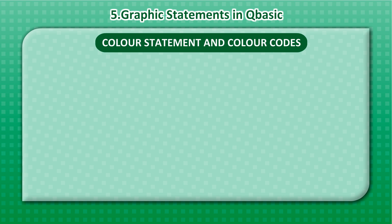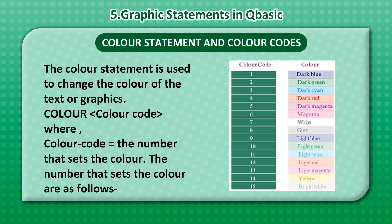Color Statement and Color Codes. The Color Statement is used to change the color of the text or graphics. The general form is: COLOR color_code, where color_code is the number that sets the color. The numbers that set the color are as follows.